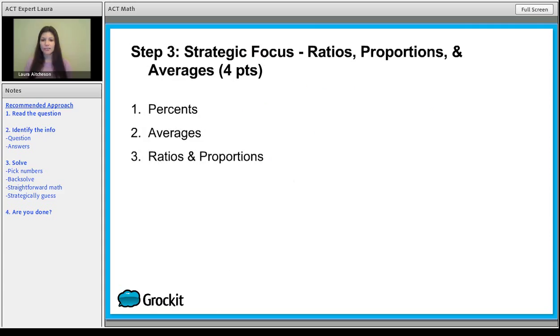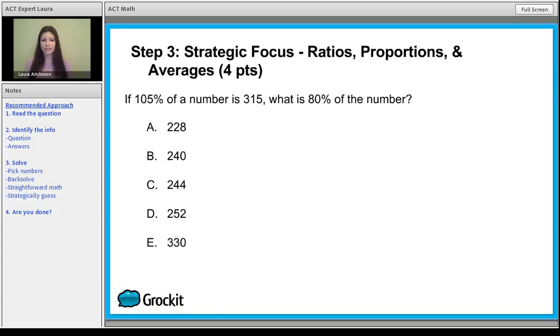Now our next category is ratios, proportions, and averages. And what's important to know is percents are in there too, because percents are ratios. Taking a look at this particular question, if 105% of a number is 315, what is 80% of the number? This is a classic question, and you want to know how to translate English into math. So if you have 105%, you can rewrite that as 1.05, of means multiply. We don't know what the number is, so that's going to be x, or any letter you'd like, is equal to 315.